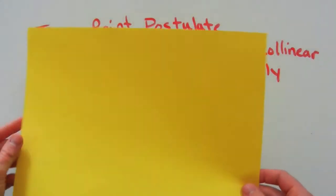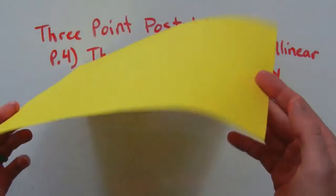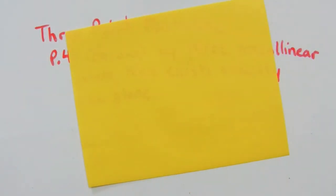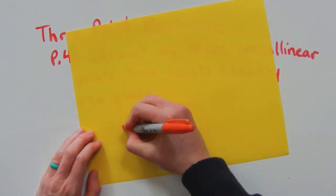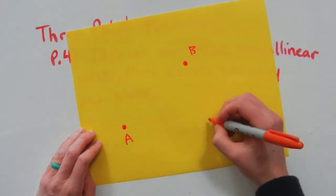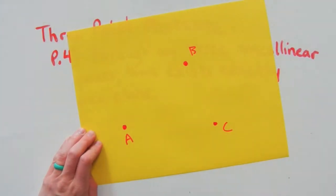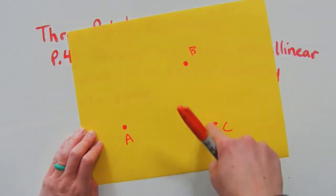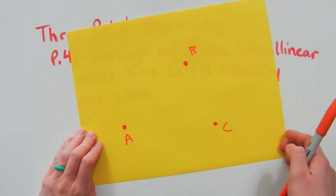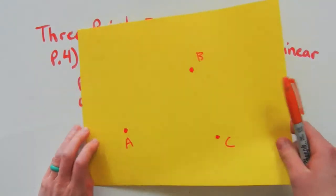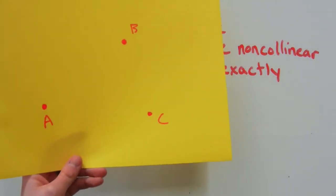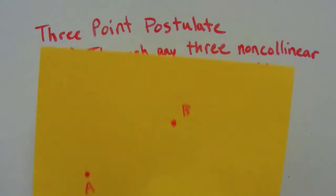We can demonstrate that on this piece of paper — pretend this piece of paper is our plane. On this plane I'm going to have point A, point B, and point C. They are non-collinear because there is no way I can connect all three together with a single line. So you can see that through any three non-collinear points there is exactly one plane.